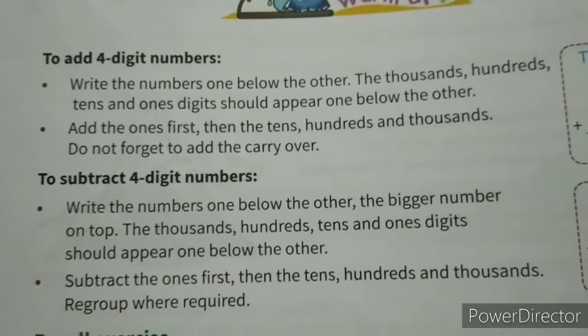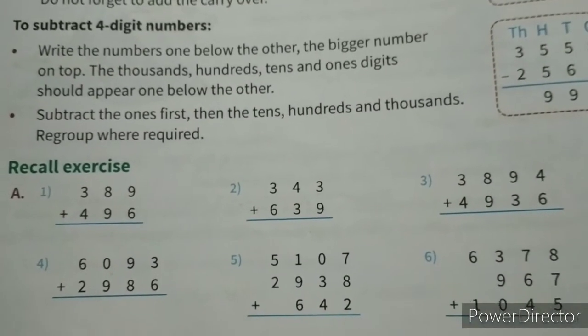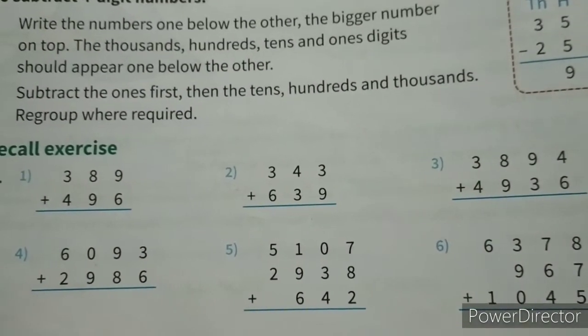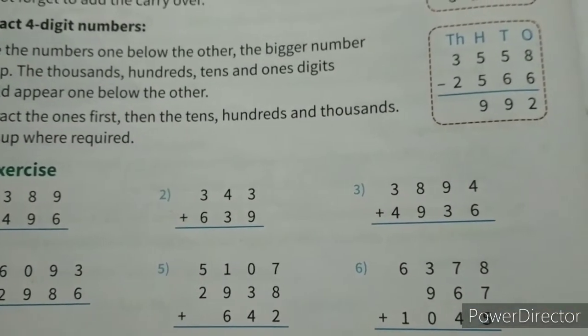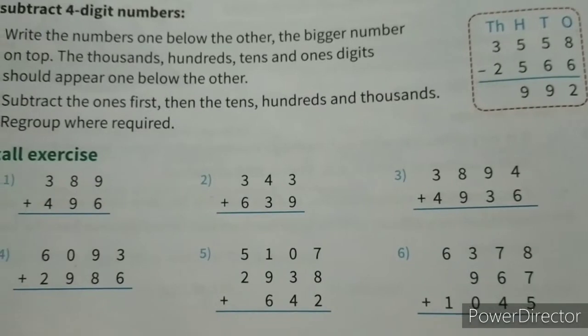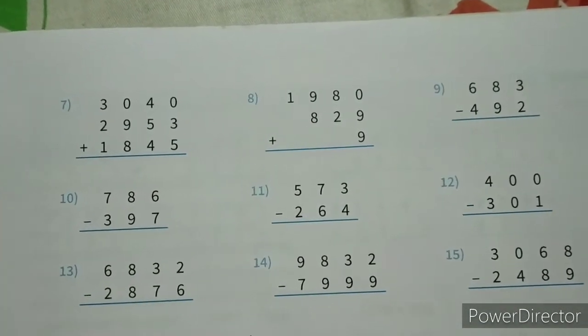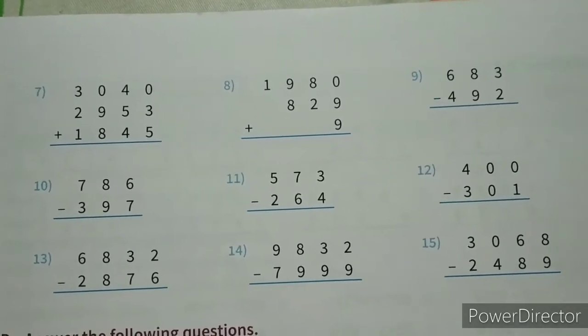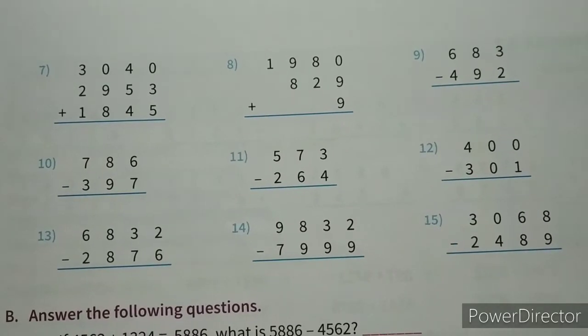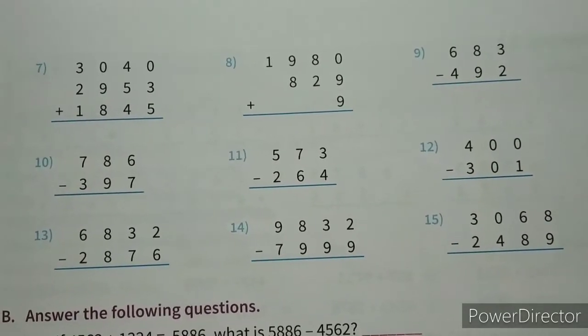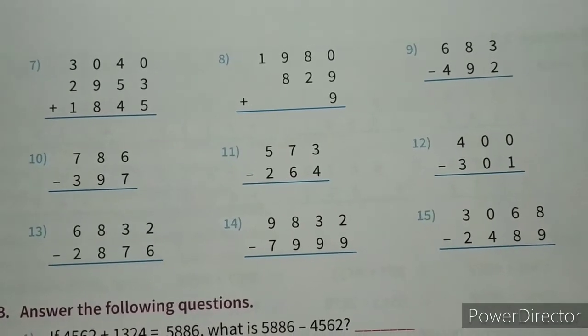See these all are given. Now recall exercise is given, all of you, that already you know, you try to solve. Children, this is your total number is your 15. From recall exercise, all 15 numbers are there. Some are Addition, some are Subtraction.